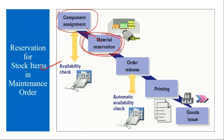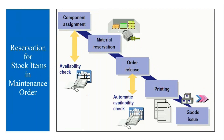After the maintenance order is released, then printing, and after that they will do the goods issue — MIGO. The stock items are issued from the engineering warehouse to the maintenance technician. I will show you this in the system.